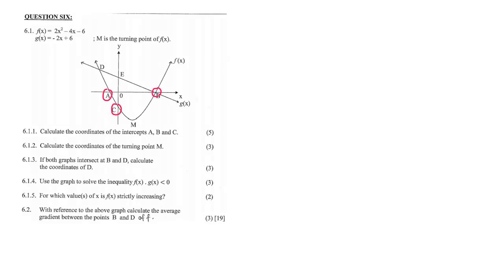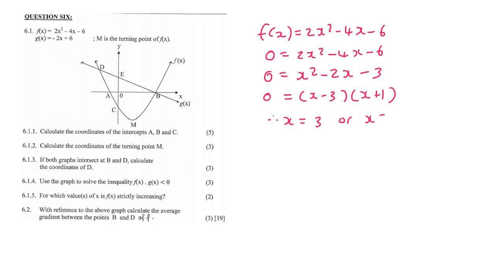For five marks that is easy because A and B are x-intercepts. To find the x-intercepts you make y equal to zero. So we say zero equals 2x squared minus 4x minus 6. You could use the quadratic formula or divide everything by 2, and this factorizes nicely as x minus 3, x plus 1. Therefore x equals 3 or x equals negative 1. So A is negative 1 and B is 3. Let's write those coordinates: A is negative 1, 0 and B is 3, 0.